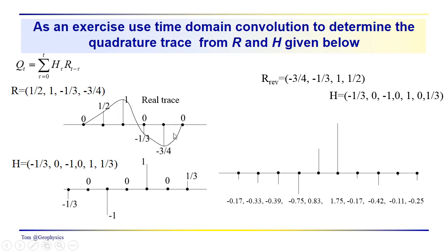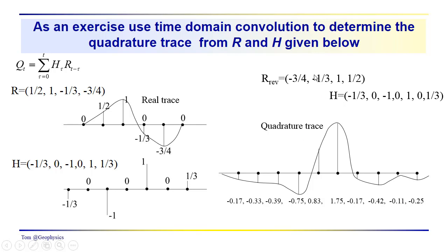This will be the real trace and this will be your quadrature trace. We have five samples in the real trace and seven samples in the time domain operator, so the output quadrature trace has five plus seven minus one equals ten samples. The real trace is then superimposed on the quadrature trace, giving you the real and imaginary components that you can use to calculate instantaneous frequency, phase, and amplitude.